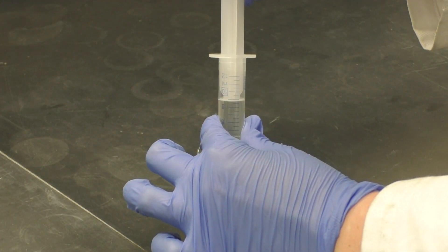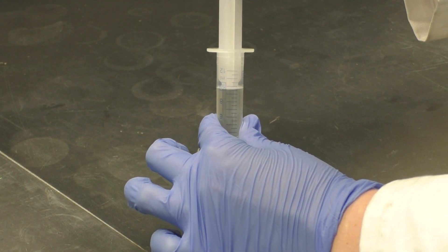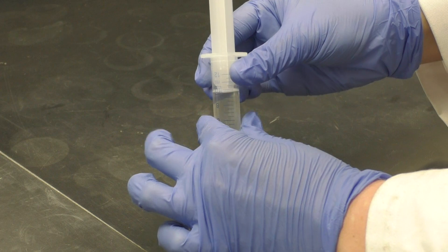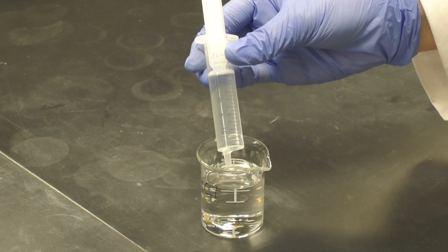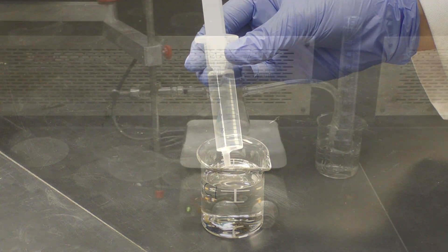To run your reaction, you will need to draw 10ml of hydrochloric acid into a plastic syringe. Be careful not to draw up any air bubbles while you do this.